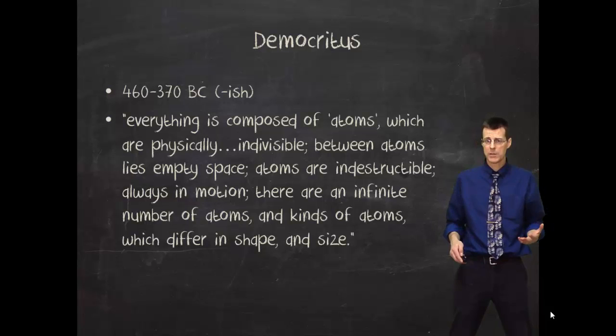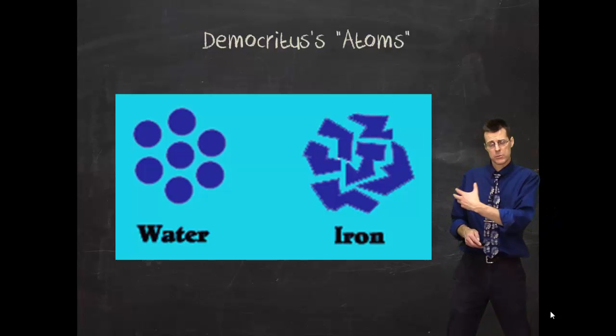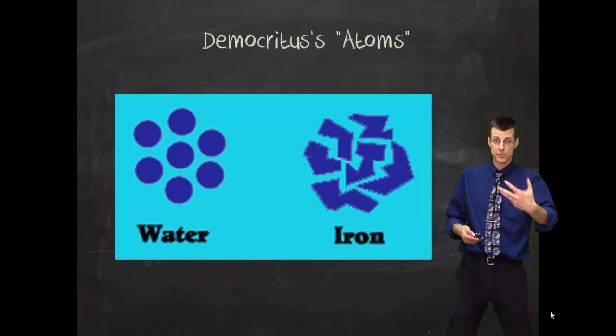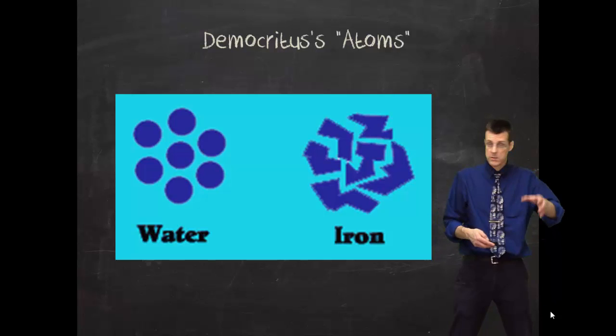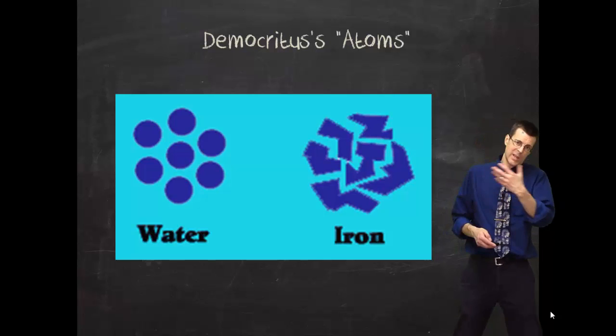So his model for that was to draw atoms that look like this. And what you'll notice is that the water atoms are round, so they'll flow, they'll roll. And water does that. If you swirl water around, it swirls around. Iron, on the other hand, he's got these hooks and things drawn in there, so those iron atoms are going to hold on to each other really tightly. And if you think about what we know about iron, it's a very hard material. So his model and his theory kind of did explain some observations.